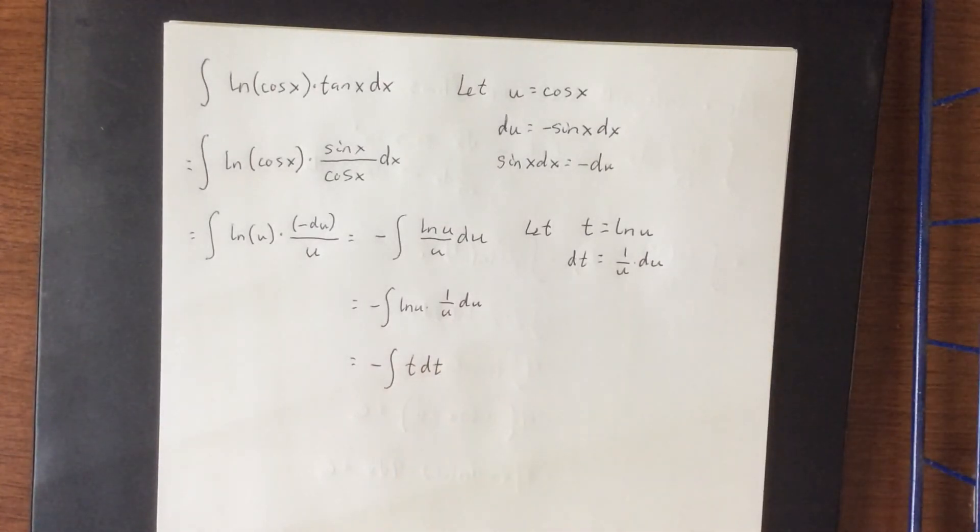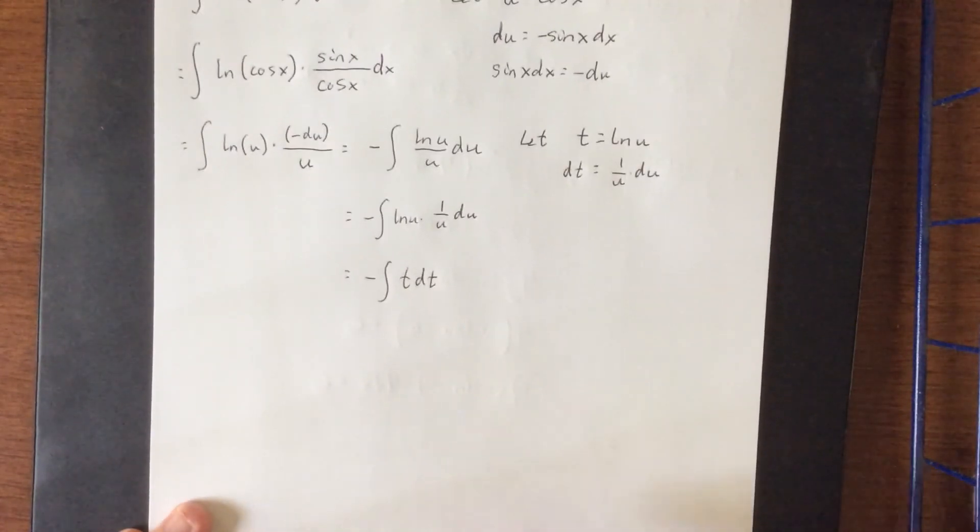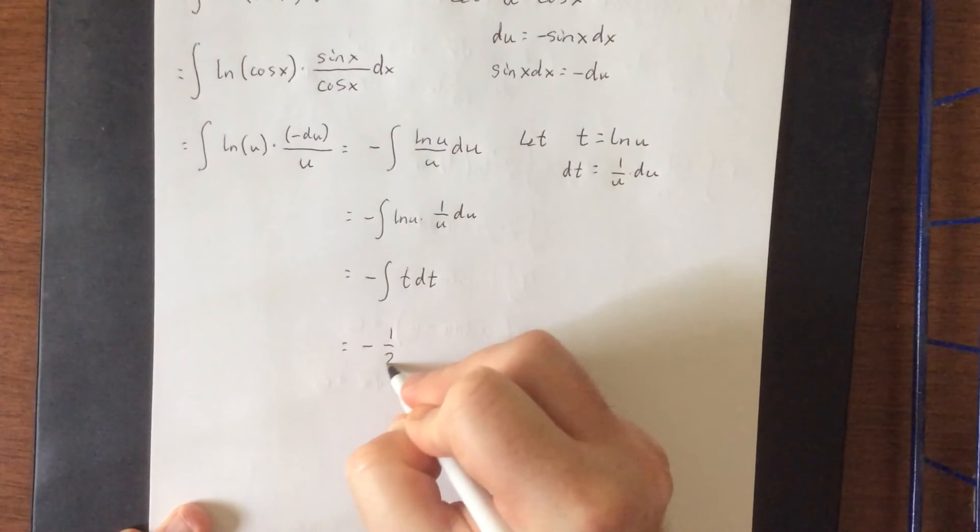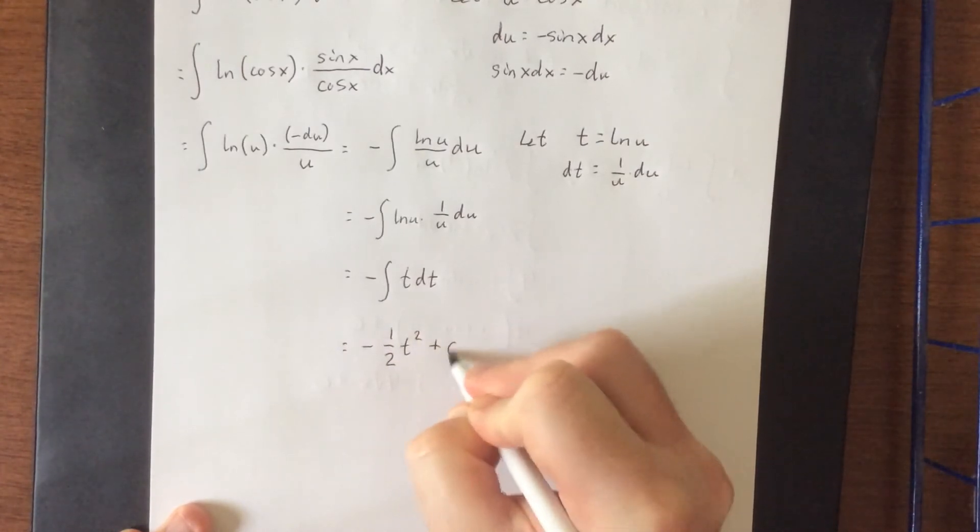So we'd be looking at the integral of the negative, or excuse me, the negative integral of t dt. Making use of the power rule, that's simply going to be negative 1 half t squared plus a constant.